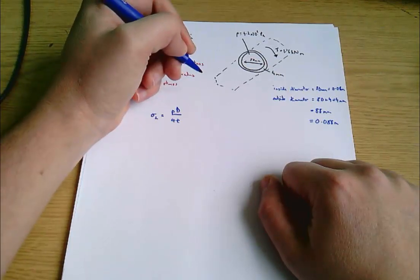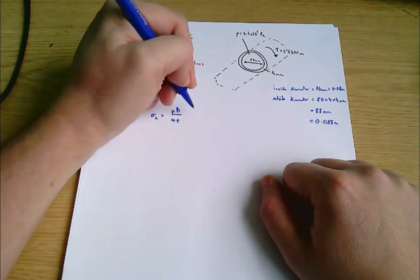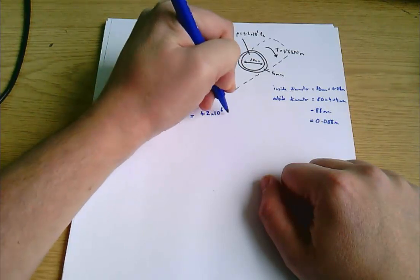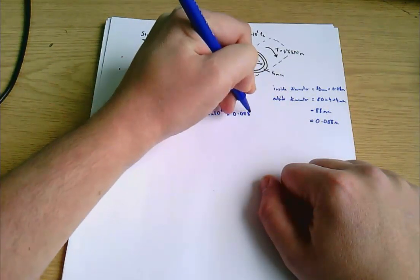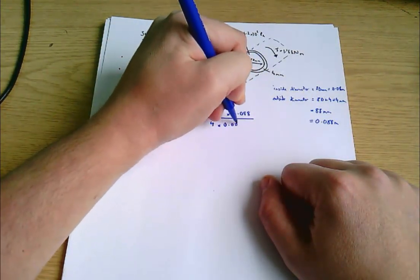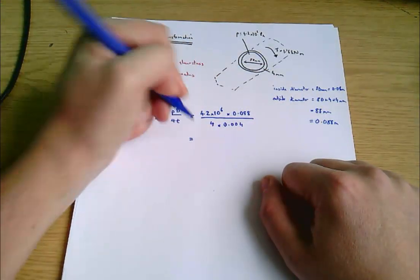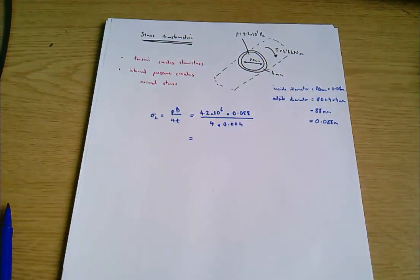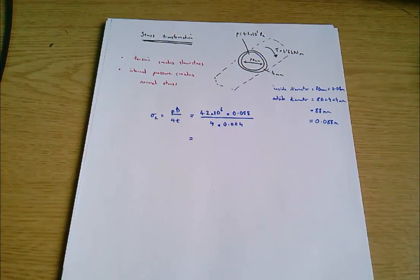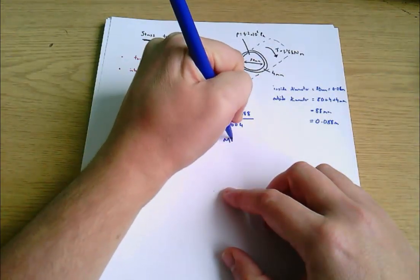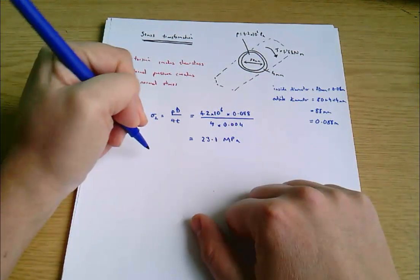Actually, I'll use the outer diameter because that'll give me higher stress. So that equals 4.2 times 10 to the 6 multiplied by 0.088, all over 4 times 0.004. T, my thickness, is 4 millimetres, which I made 0.004 here, and that comes to 23.1 megapascals.